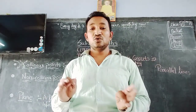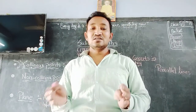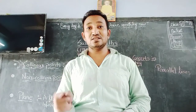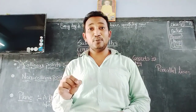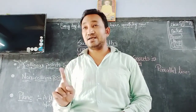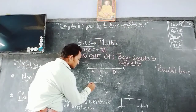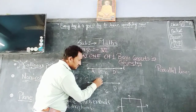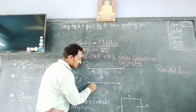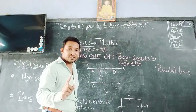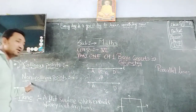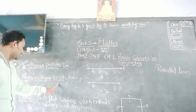Our next topic is non-collinear points. Points which do not lie on the same line — means points जो एक ही line पर नहीं हैं. Here A is here, B is there, C is here, D is there — they are not on the same line. So like this, we compare the non-collinear points.